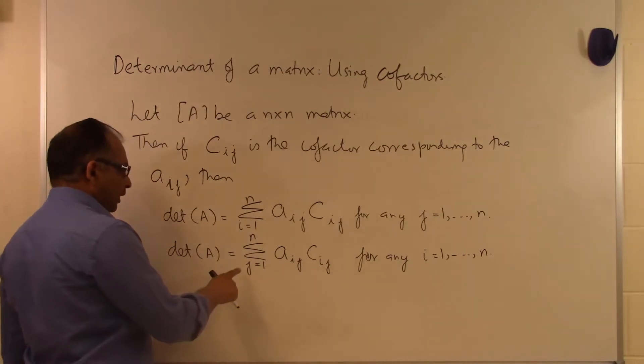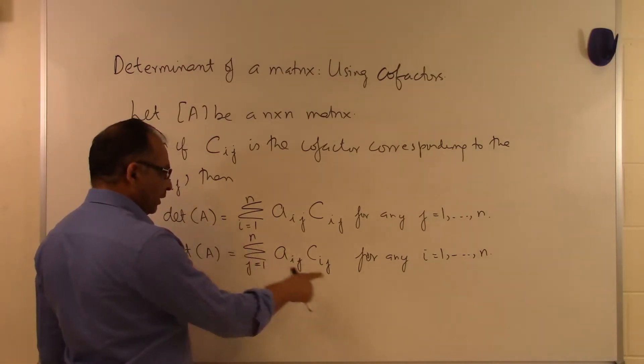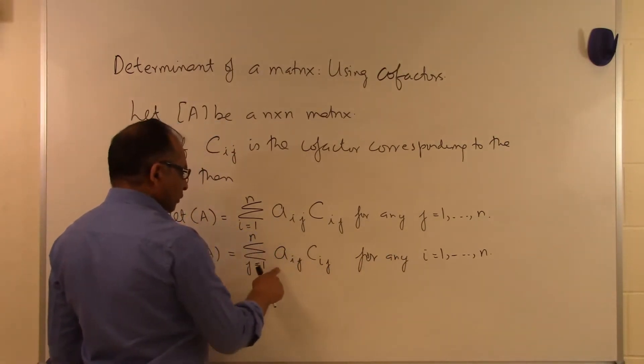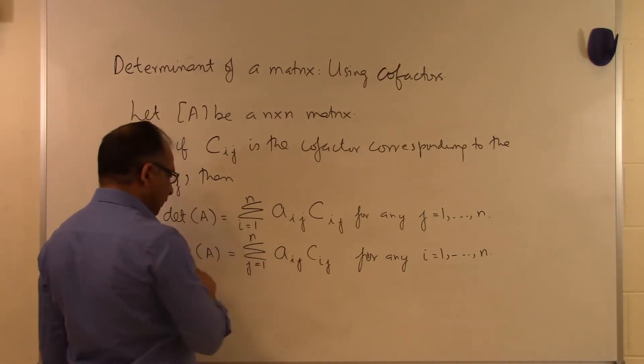Or we can calculate the summation going from j equal to 1 to n, but then we can use any value of i going from 1 to n. So the product of those two numbers through this summation will give us the determinant of the matrix.